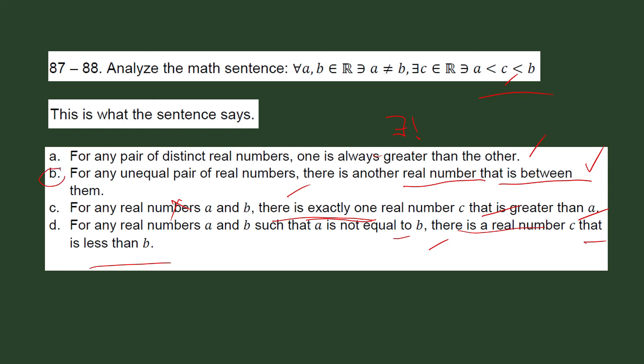It's letter B. Okay, for any unequal pair of real numbers, that is the idea behind this sentence, there is another real number that is between A and B. Okay, or that is between those pair of numbers, of real numbers. So our choice here is letter B. For any unequal pair of real numbers, there is another real number that is between them.